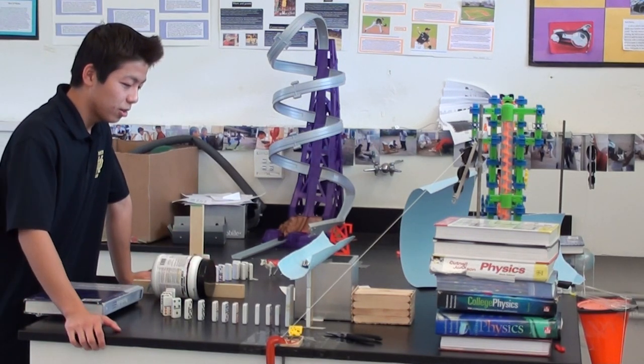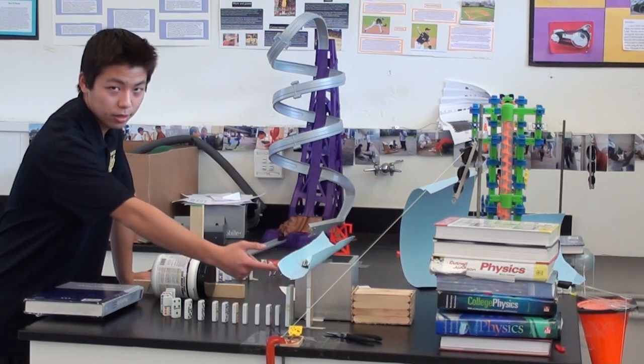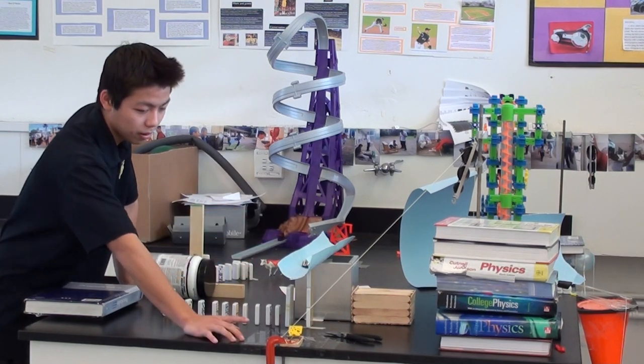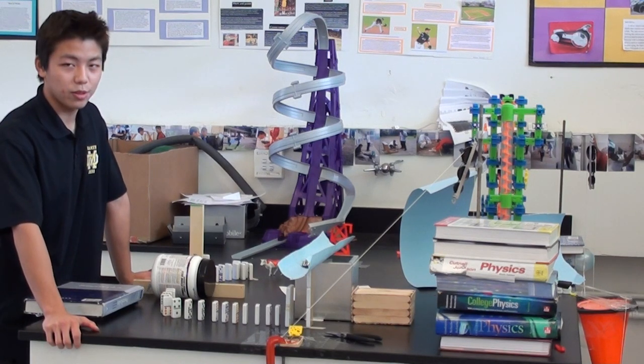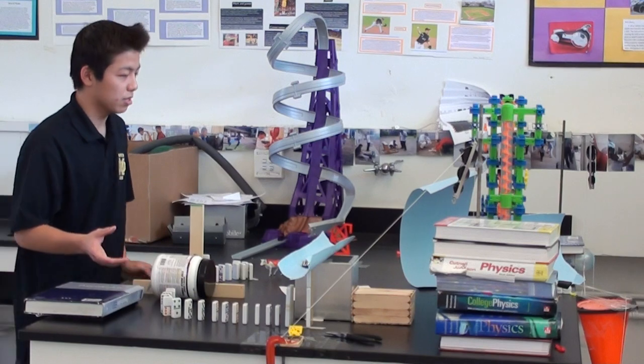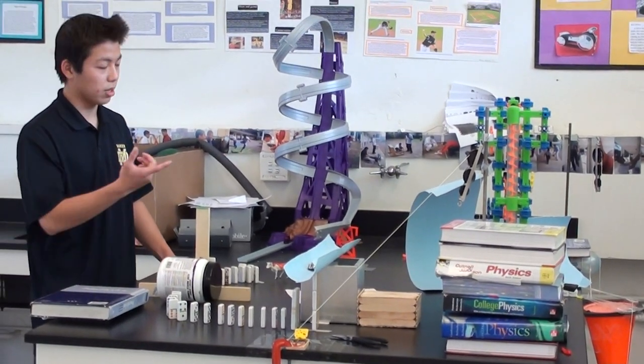This big domino right here. Can you see that? And there's this blue ramp. And a car will fall down onto a mousetrap, which is one of the levers, I believe. And that activates the weight onto the frying pan, which turns out...